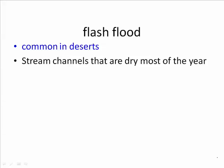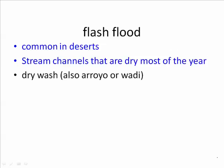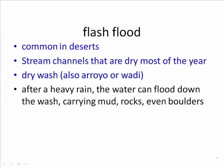Stream channels are dry most of the year in the desert. However, in a flash flood they can be filled very quickly with a wall of water. The dry washes are also called arroyos or wadis. The water comes down sometimes very quickly and dangerously, carrying mud or rocks and even boulders. If it is carrying rocks and boulders, it's referred to as a debris flow.